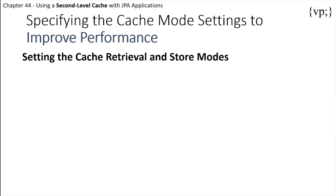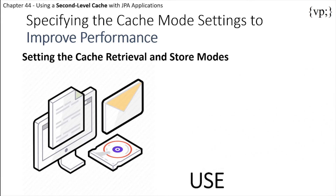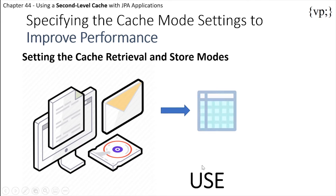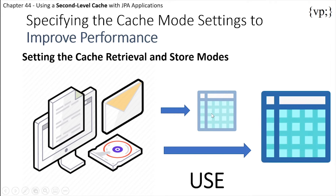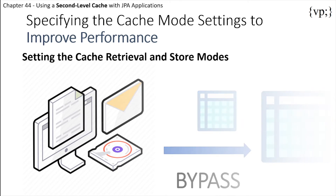To set up the cache retrieval and store modes, you can further modify the behavior of the second level cache. For cache retrieval, you can use the default USE mode, where data will be retrieved from the second level cache if available, and if not, it will go directly to the database. You can also use BYPASS, where the second level cache is not accessed and is bypassed entirely.